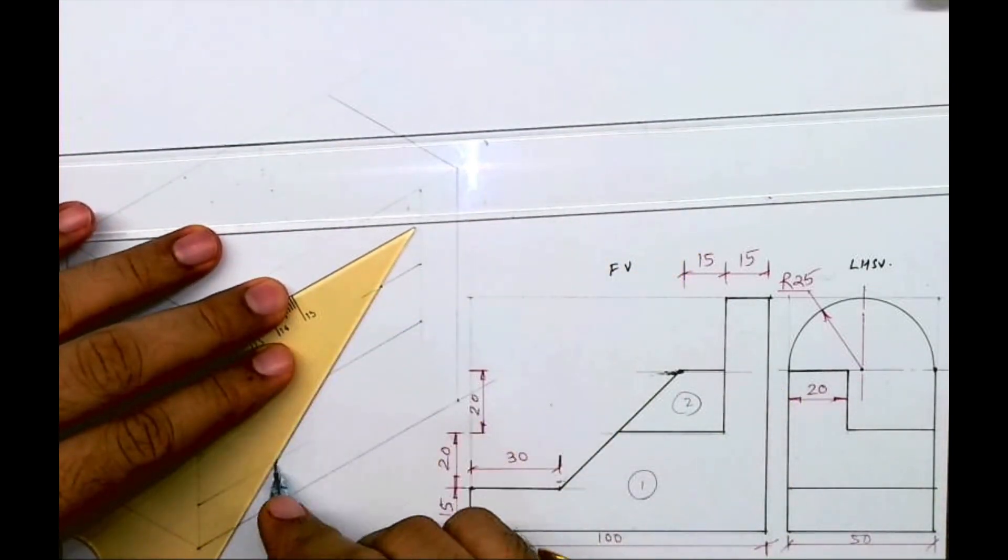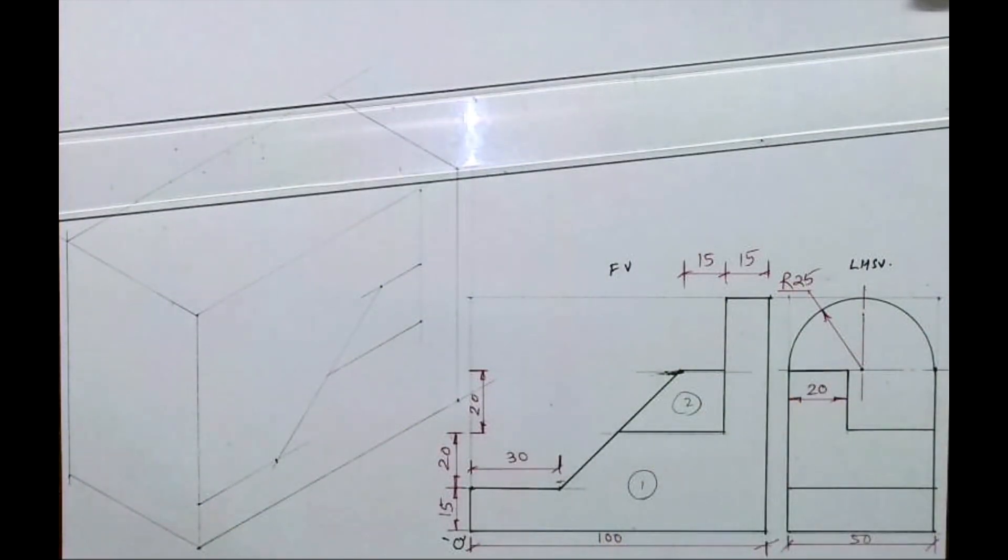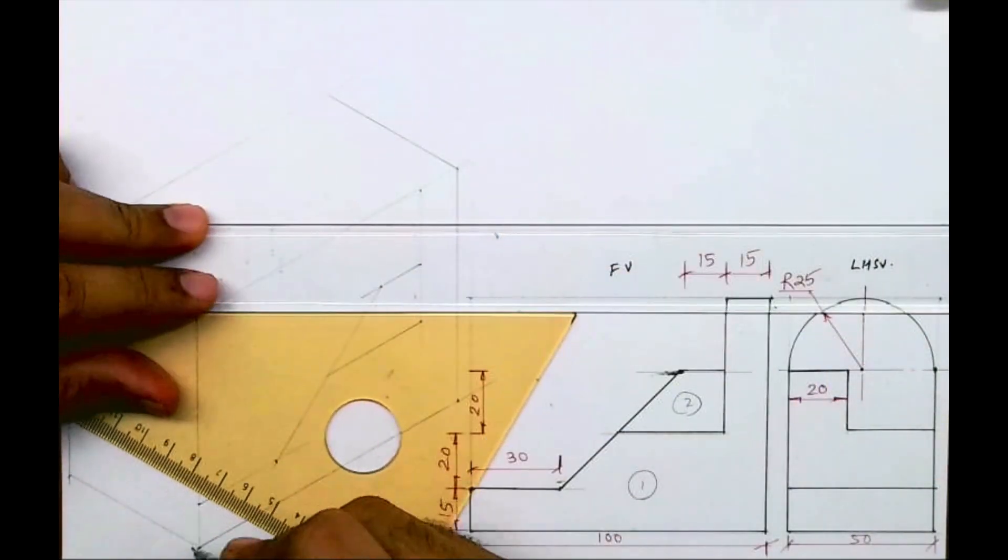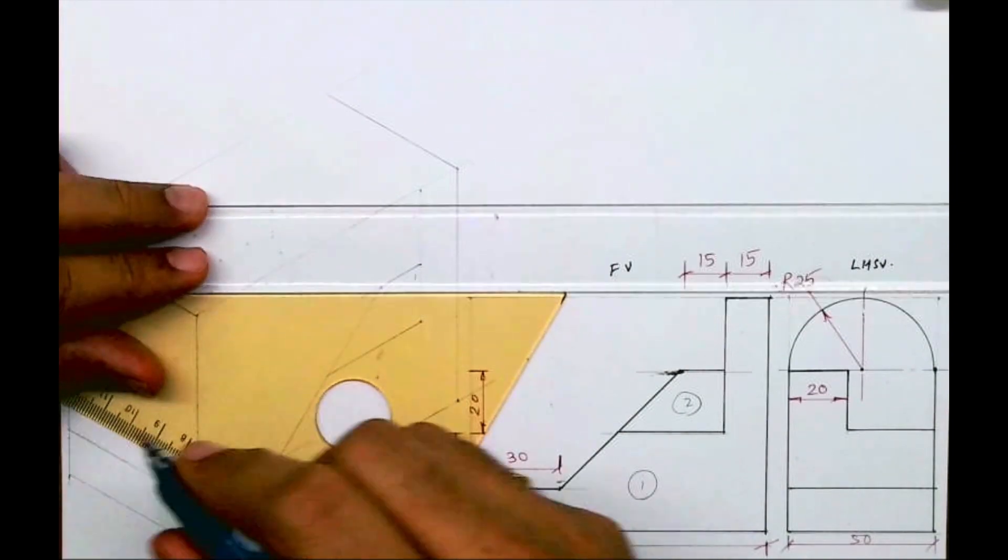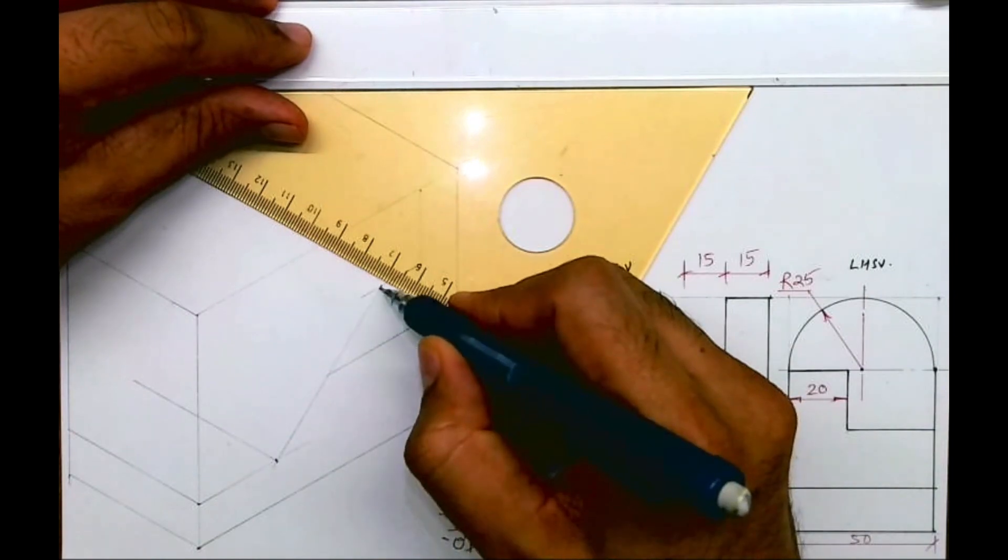And then you join this, so you'll get this part. Whatever is there in the front, the same thing is behind. So with that concept, you can take this behind all these lines by 50.